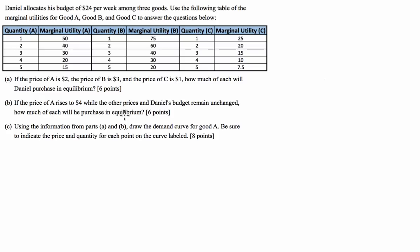For part B, if the price of A rises to $4 while all other prices and Daniel's budget remain unchanged, how much of each good will be purchased in equilibrium — that is, how much of each good will be in Daniel's optimal consumption bundle? For part C, we're going to use the information from parts A and B to draw a demand curve for good A, making sure to indicate the price and quantity for each point on the curve and label it.